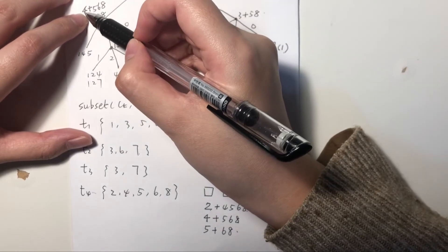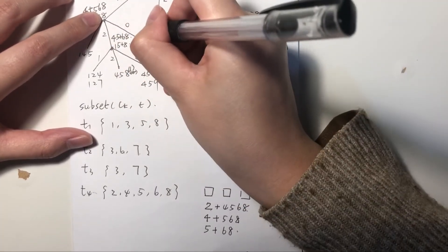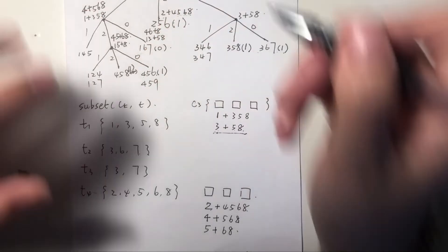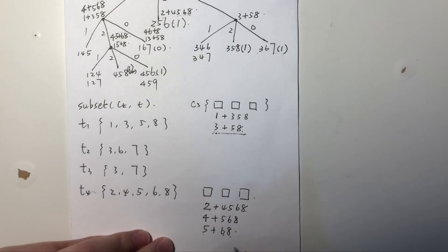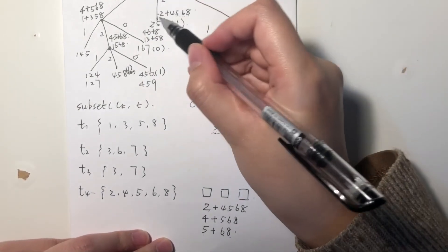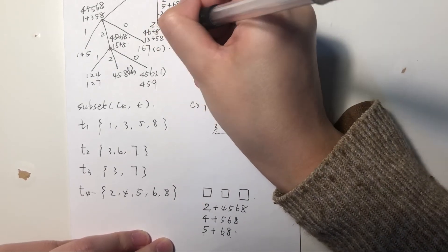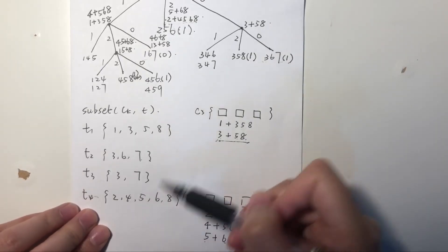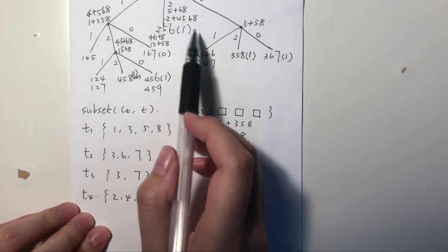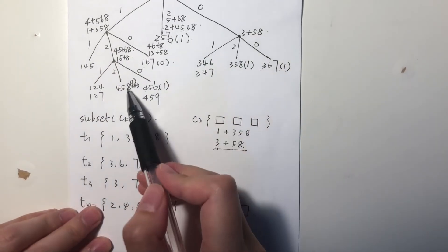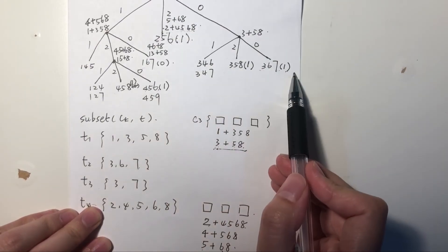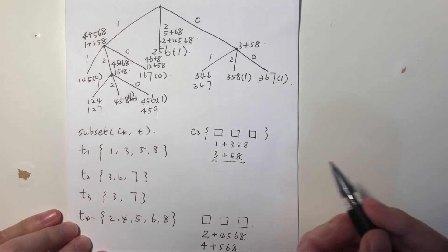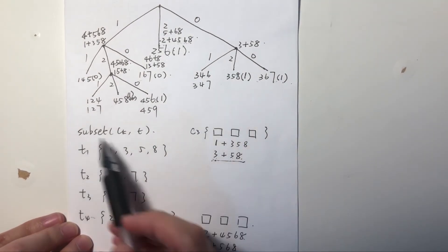There's another case: {4,6,8}. 6 goes to this branch and it does not contain any candidate, so it's 0. The third case is {5,6,8}: 5 goes to this branch and it does not contain any candidate. So after scanning all four transactions once, we can get the occurrences of all candidates. Only these candidates occur once; other candidates do not occur at all — basically 0. That is the support count result for C3 over these four transactions.